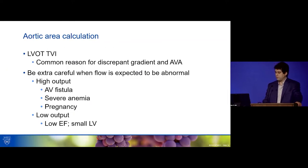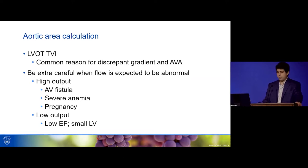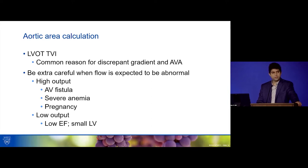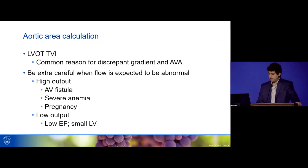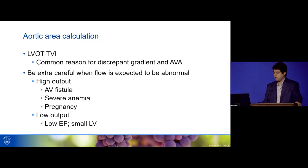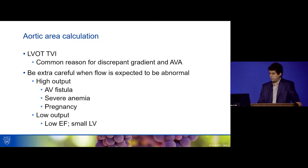This takes us to the issue of aortic valve area calculation. The LVOT-TVI is a big Achilles heel and a common reason for discrepancy between gradient and aortic valve area values. You have to be extra careful when flow is expected to be abnormal — that goes for high output states like AV fistula, severe anemia, and pregnancy — but also when flow is expected to be low, such as with systolic dysfunction or a small hyperdynamic hypertrophied ventricle with low stroke volume and bad AS. Just be careful with LVOT flow calculations.